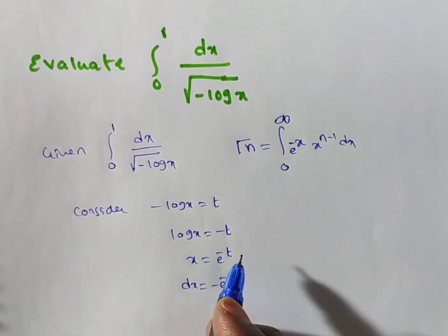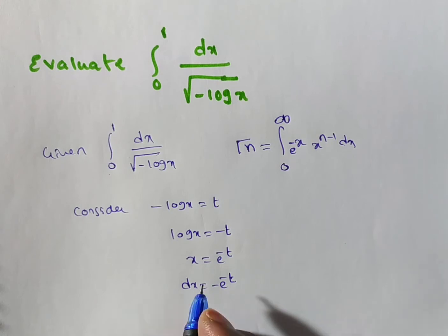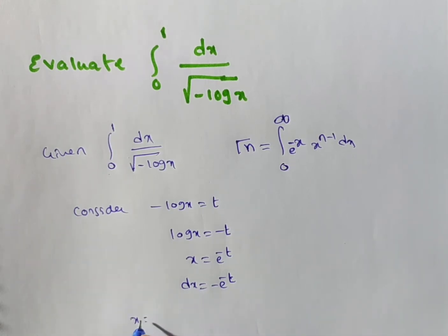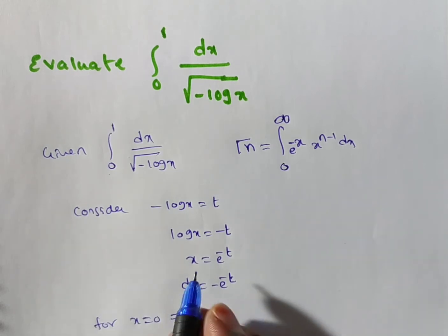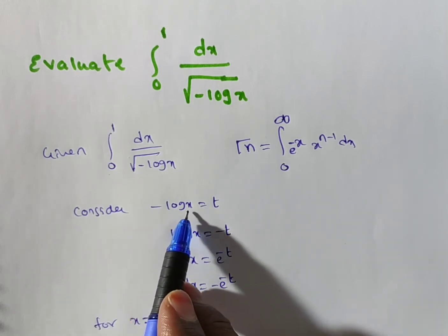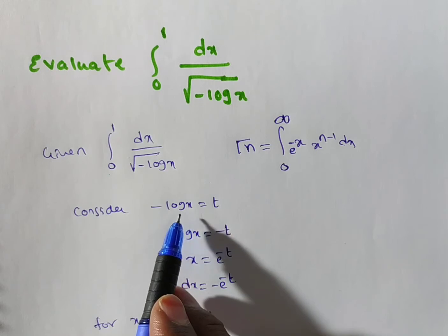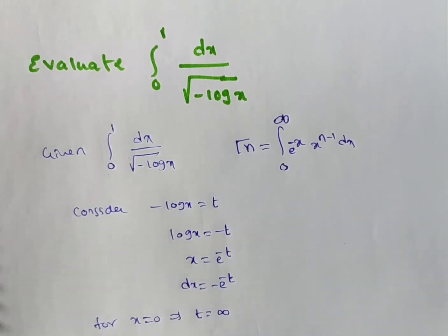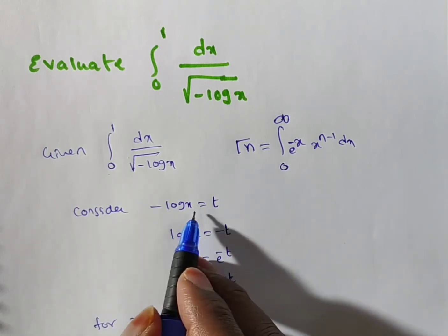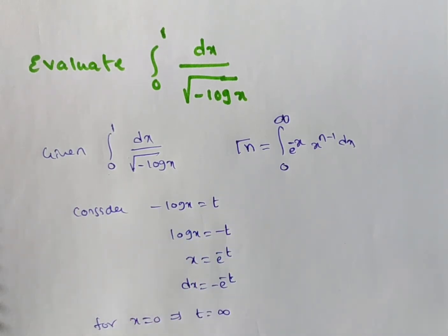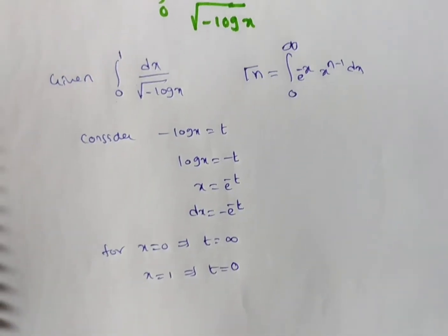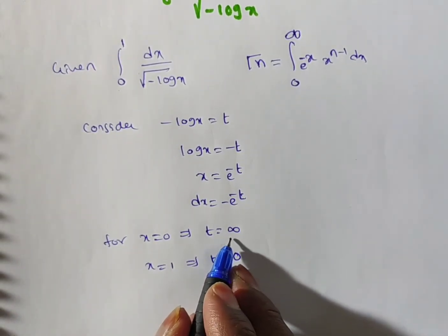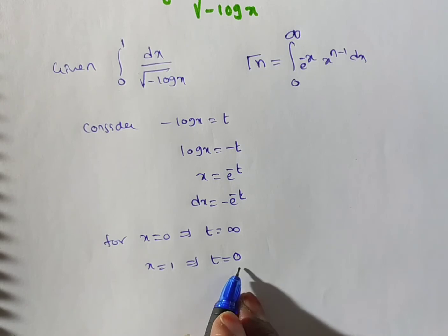We are changing x in terms of t, so we have to change the limits as well. For x equal to 0: log 0 is minus infinite, so minus of minus infinite gives plus infinite — so t equals plus infinite. For x equal to 1: log 1 is 0, and minus 0 is 0, so t equals 0. Therefore the lower limit of t is infinite and the upper limit is 0.